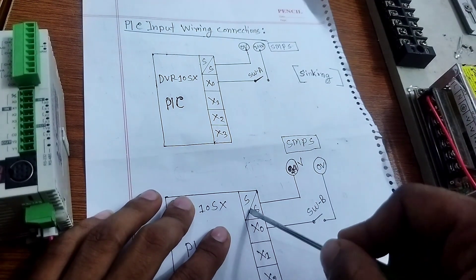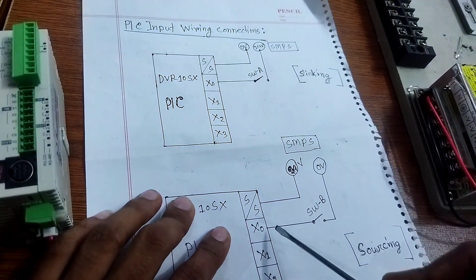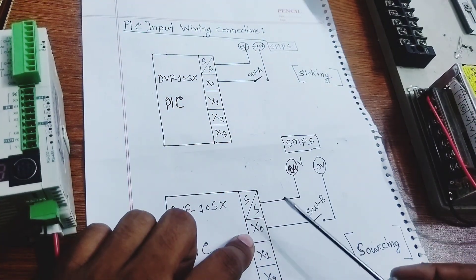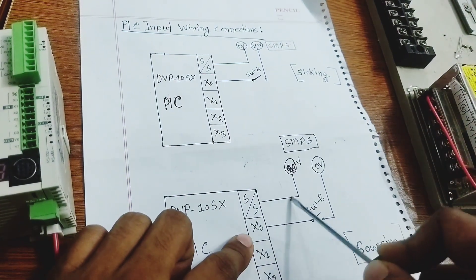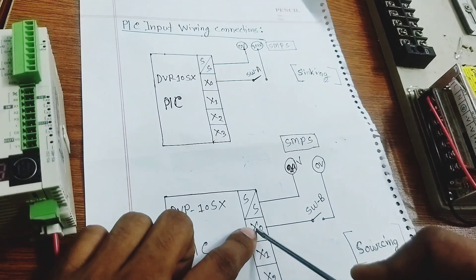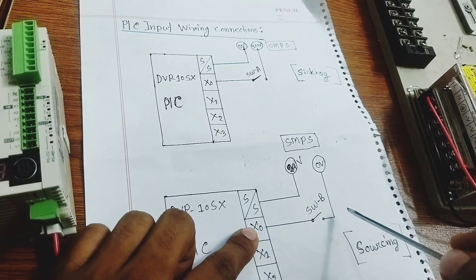The SS port connects to SMPS zero volt, and input X0 terminal switches the 24 volt - this is sinking. Now I am practically showing this: SS port, X0, X1, X2, X3, and outputs Y0, Y1.